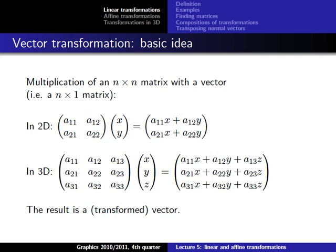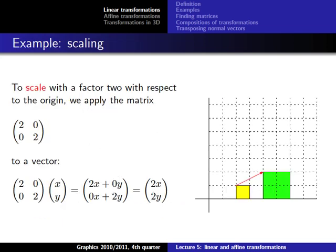In the 3D case, we multiply the coefficients: a11 with x, a12 with y, a13 with z, and then sum them up to get one new coefficient. We do this for each row and get a three-dimensional vector. I gave the example of multiplying a 2D vector with the matrix [2,0; 0,2], and we get a vector where both coefficients are twice as large — scaled by a factor of 2.